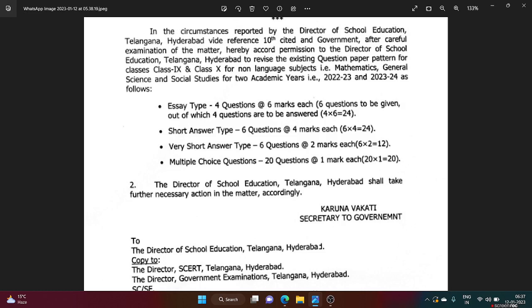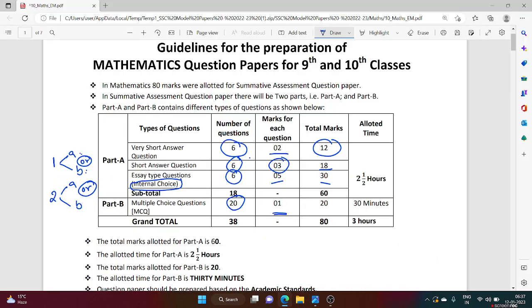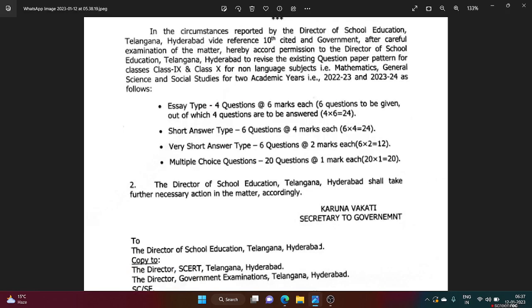Essay type questions, you should answer only four. Earlier, there are six questions which they wanted you to answer. Here, six questions and each question carries five marks. Now they are saying only four questions you will have to answer, and those four questions also you have a choice there, not internal choice, normal choice you have. And each question carries four marks. Each question carries six marks. Earlier it was five marks, now it is six marks.